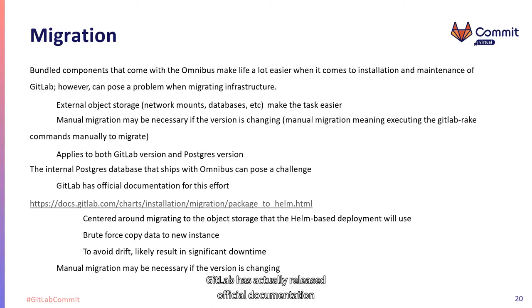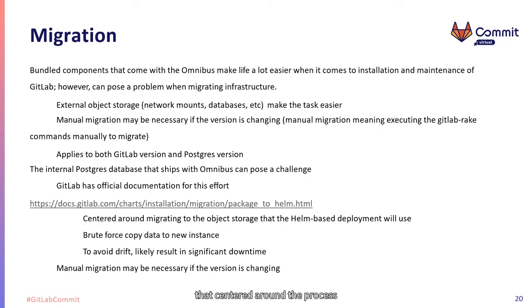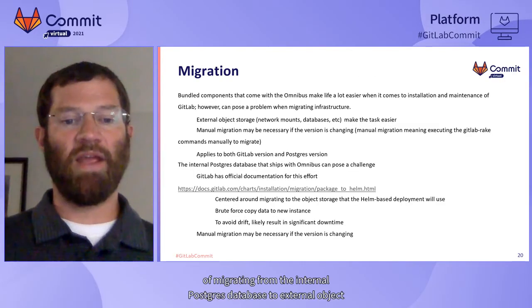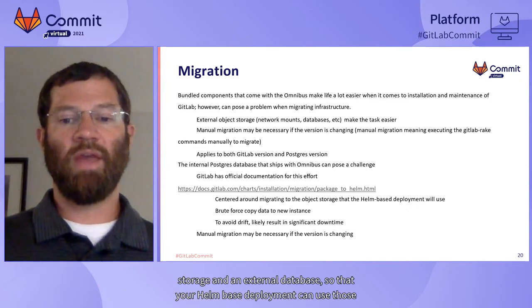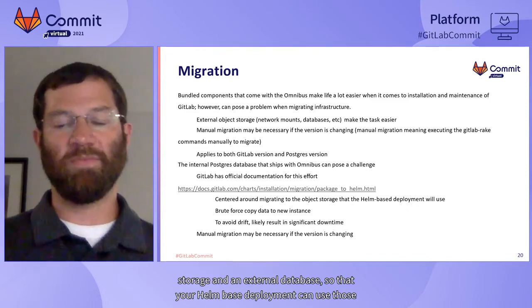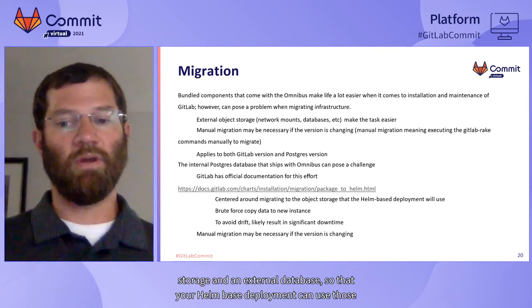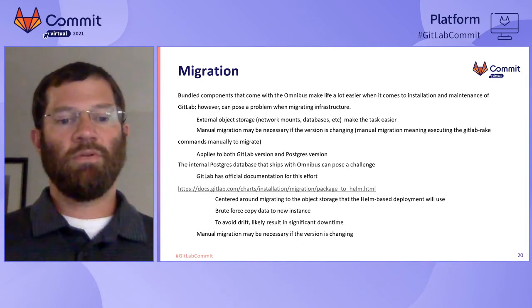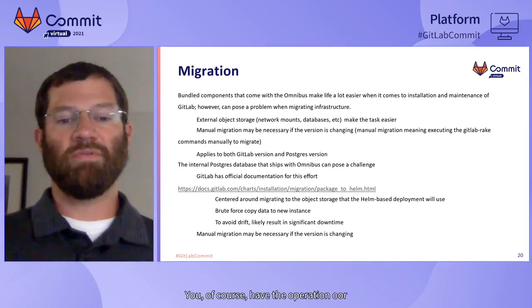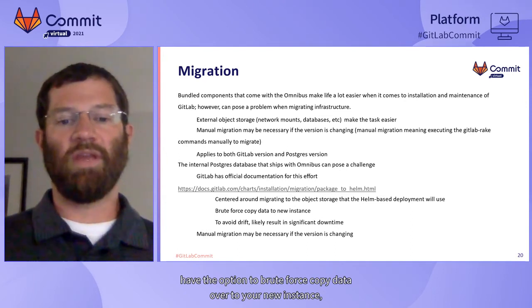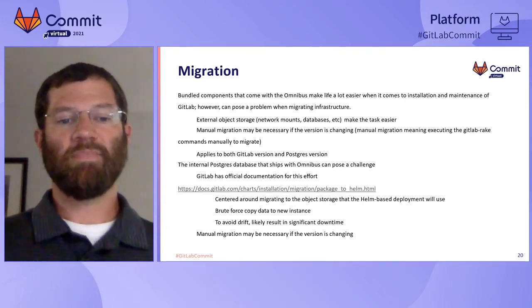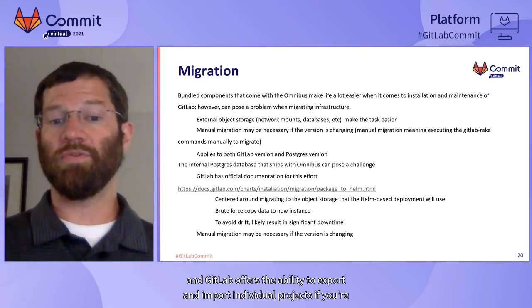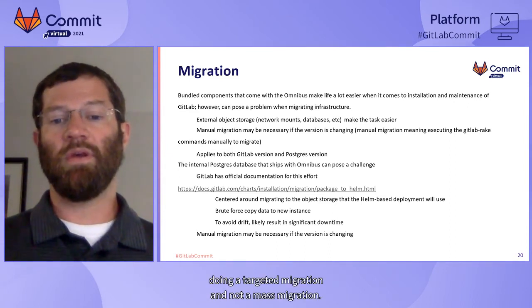The internal Postgres database that comes with an Omnibus install can be a particular challenge. GitLab has released official documentation centered around the process of migrating from the internal Postgres database to external object storage and an external database so that your Helm-based deployment can use those. You also have the option to brute force copy data over to your new instance, and GitLab offers the ability to export and import individual projects if you're doing a targeted migration rather than a mass migration.